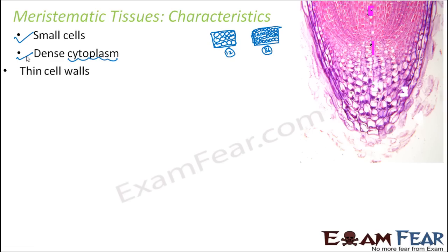The next characteristic is thin cell walls. The cell wall provides protection, and the thicker it is, the more difficult it is to break. Since meristematic cells are actively dividing, having thin cell walls makes it easier for the cell to divide and form new cells.